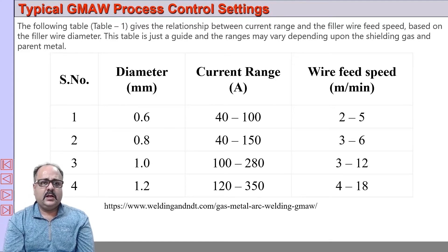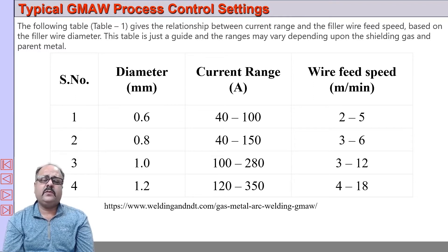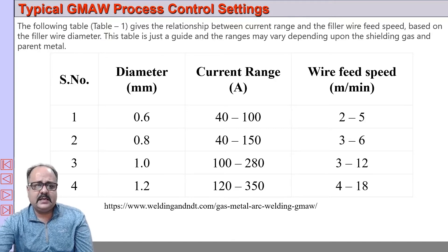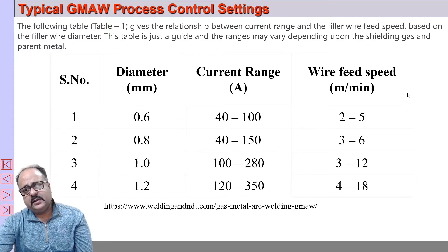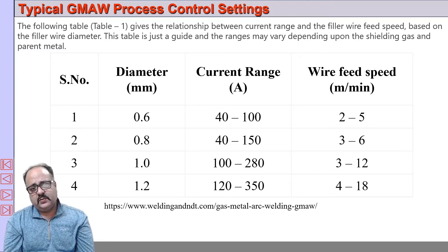An indicative table relates electrode diameter, current setting, and wire feed speed. These values will depend on the mode of metal transfer selected.